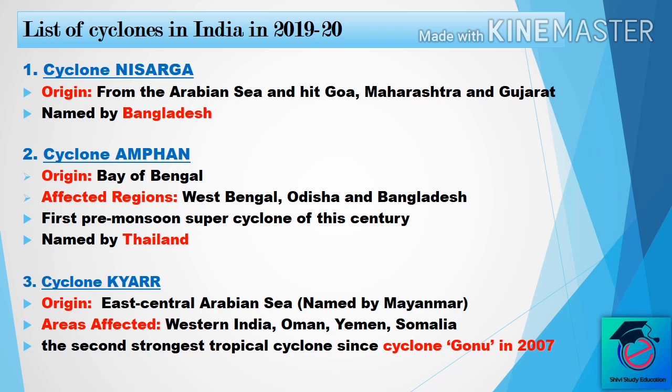The third one is Cyclone Kyarr. Its origin was from the east-central Arabian Sea. The name was suggested by Myanmar. The areas affected were western India, Oman, Yemen, and Somalia. This is the second strongest tropical cyclone after Cyclone Gonu in 2007.